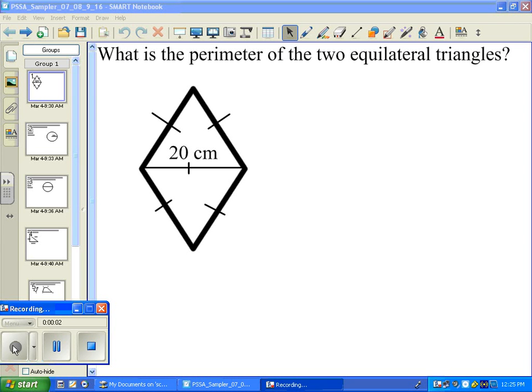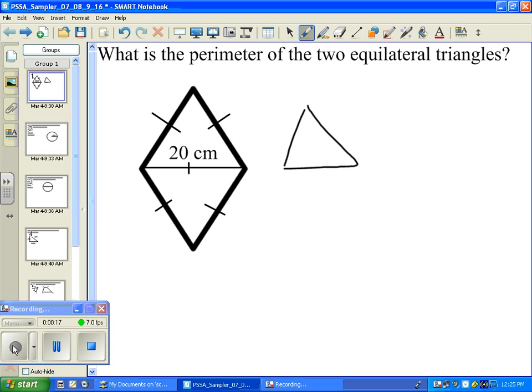This brings up this next one. What is the perimeter of these two equilateral triangles? First thing I would like to point out is that when you have an object like this and when you have these hash marks going through each side of an object, what that indicates is that all of the sides that have the hash mark are equal.